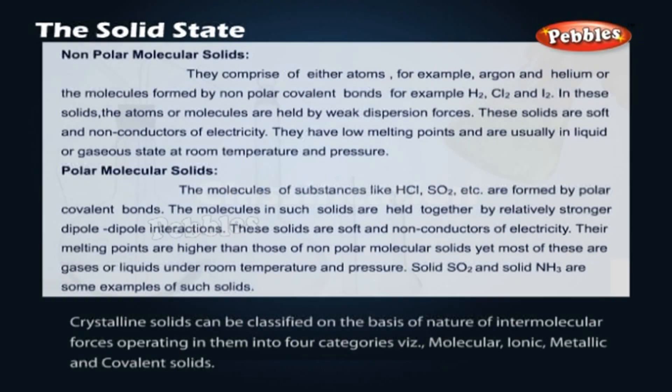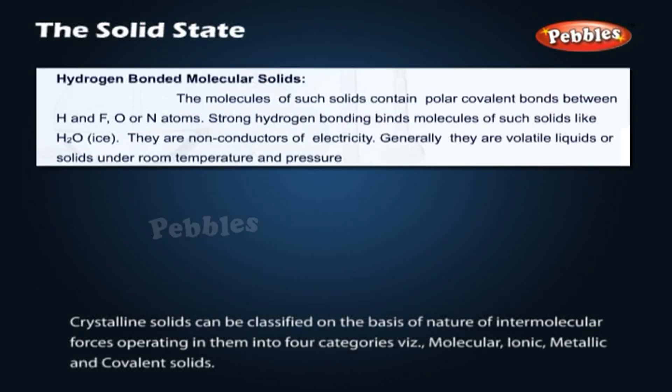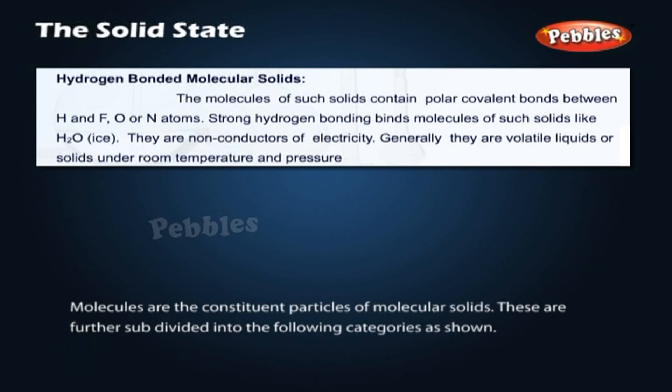Classification. Crystalline solids can be classified on the basis of nature of intermolecular forces operating in them into four categories: namely molecular, ionic, metallic, and covalent solids. Molecules are the constituent particles of molecular solids. These are further subdivided into the following categories as shown.